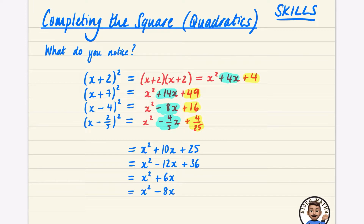Completing the square is about going backwards from these expanded forms and forcing an expression to look like a squared bracket. There are two ways to approach this. For the first example, the squared part suggests an x plus 5 squared — and we check: the middle term 10x is double 5 times x, so yes, that one can simply be written as x plus 5 squared.